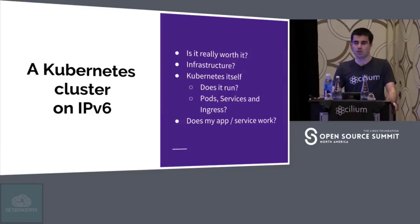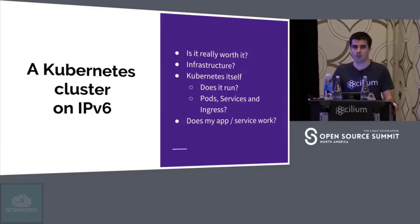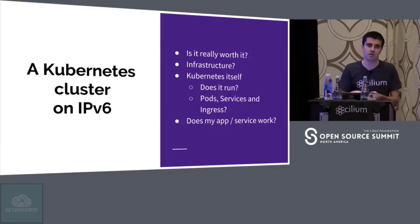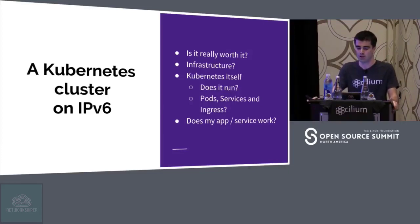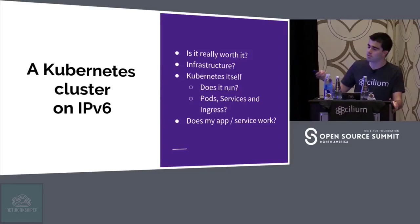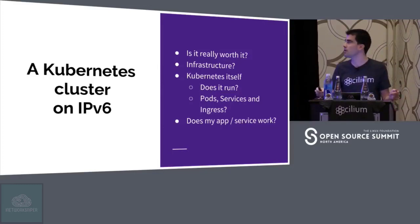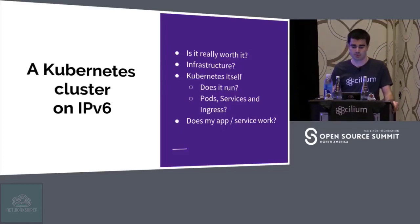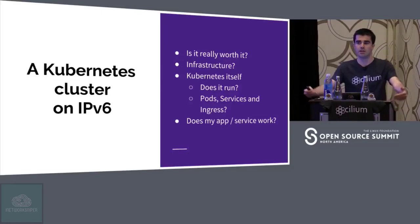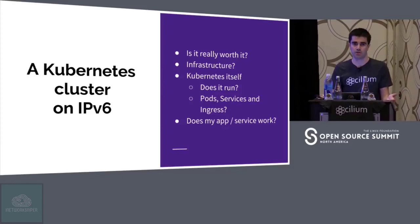So what about Kubernetes running with IPv6? The first question that I came up with was: is it really worth it to make this talk? And what about the infrastructure — if I have the infrastructure to run Kubernetes with IPv6, what about Kubernetes itself? Does it run? Do the pods and the services and the ingress Kubernetes concepts — do I need to make any changes at all? And after that, if I have a Kubernetes infrastructure, what about my apps? Will they run or not?